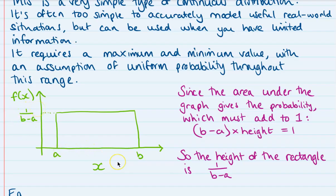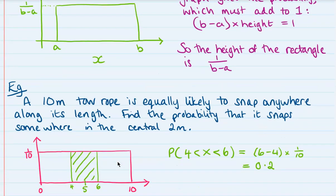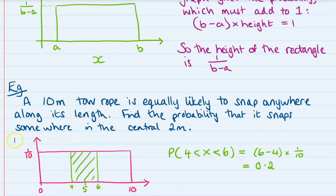So an example of how this could be used: we've got a 10 meter tow rope. It's equally likely to snap anywhere along its length. Find the probability that it snaps somewhere in the middle two meters.